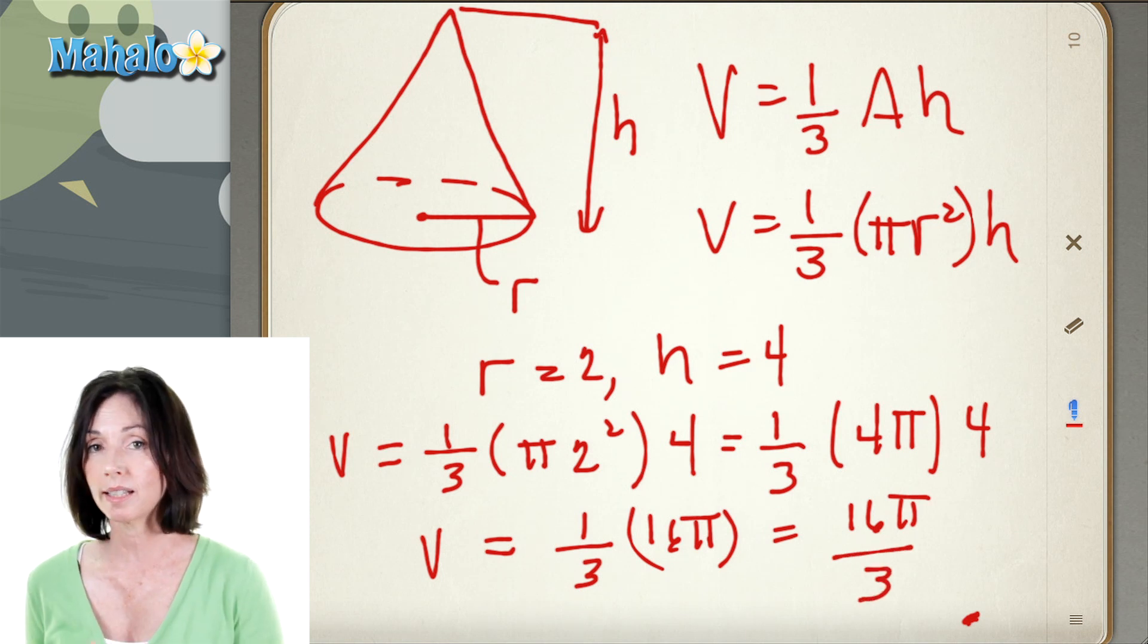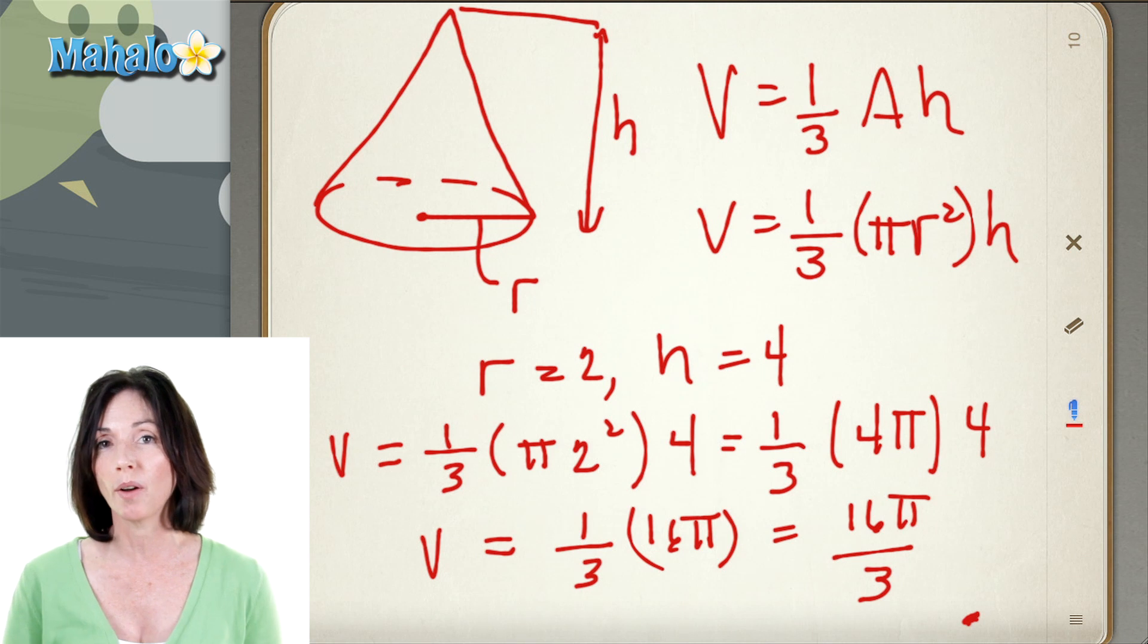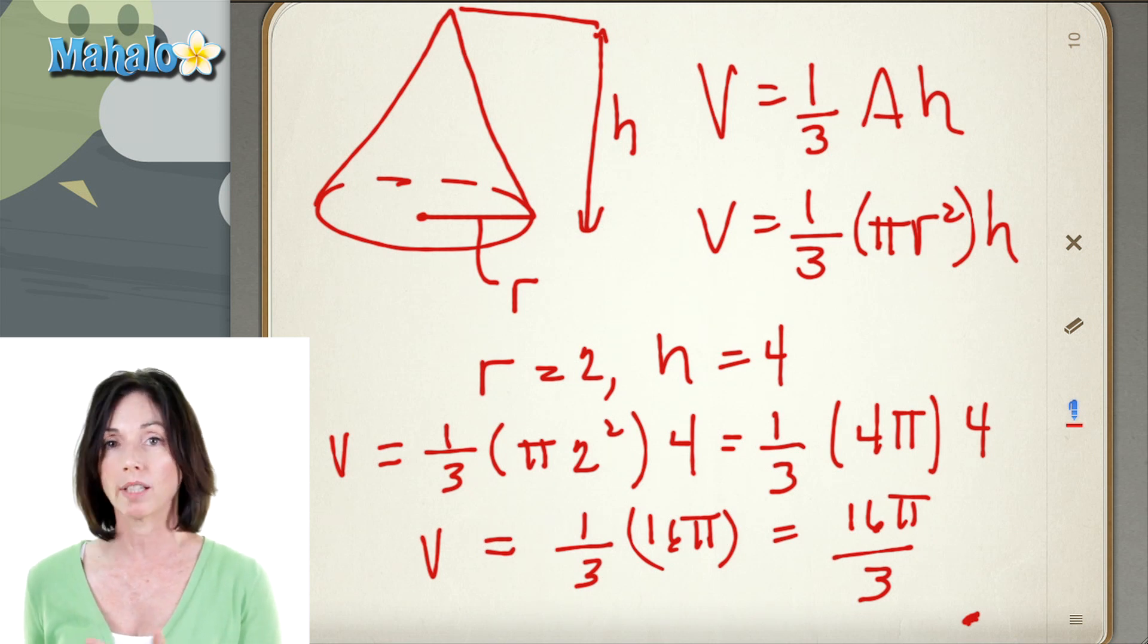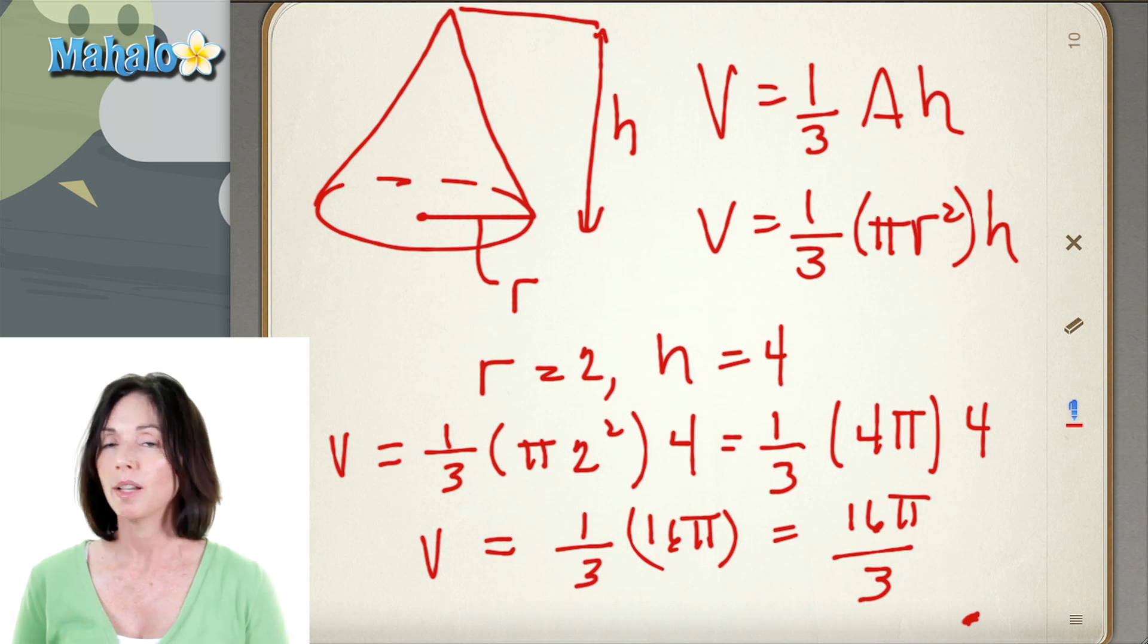Now this is a perfectly acceptable way to leave the volume of the cone. You can leave it in terms of pi. If you want a numerical approximation for it, you can approximate pi as 3.14 and just calculate the value out. But that's how you find the volume of a cone: one-third the area of the base times the height.